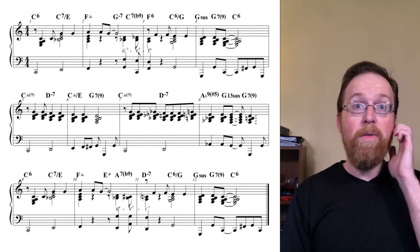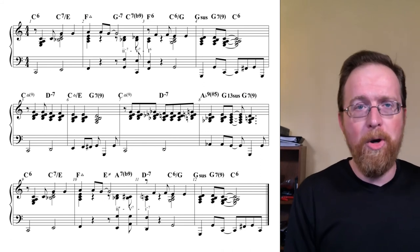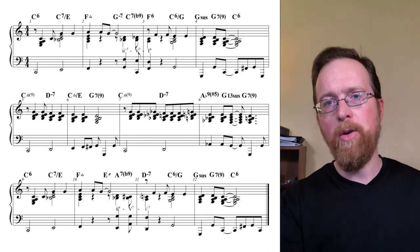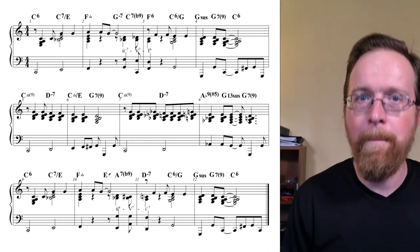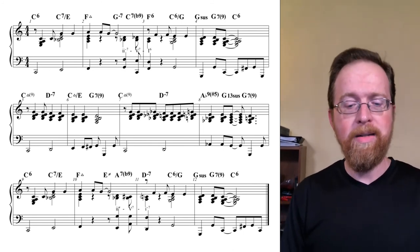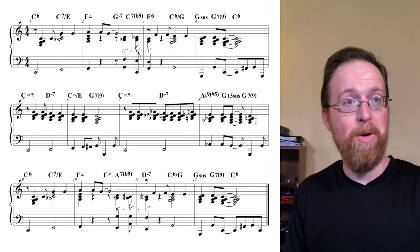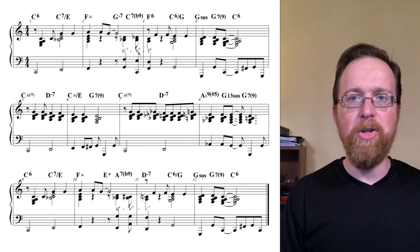All right, in measures 5 and 6, I have the right hand doing that planing motion down and I decided to have the baseline move in stepwise contrary motion with that right hand. Then on the repeat in measures 7 and 8, I decorate the melody first with a little chromatic passing motion and then I use something that's called sidestepping in measure 8.